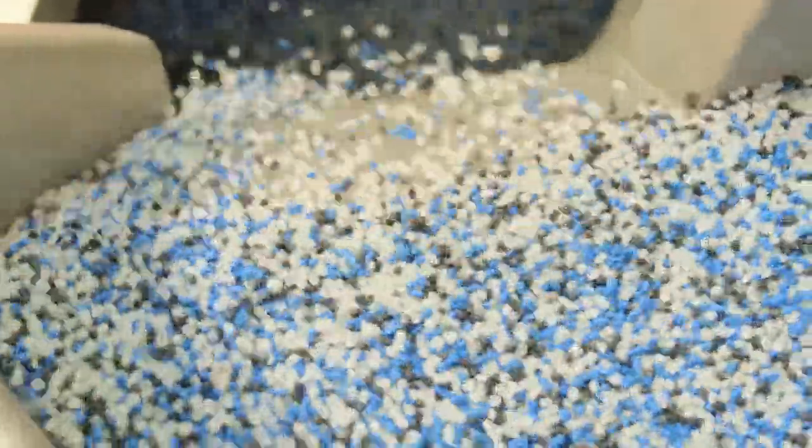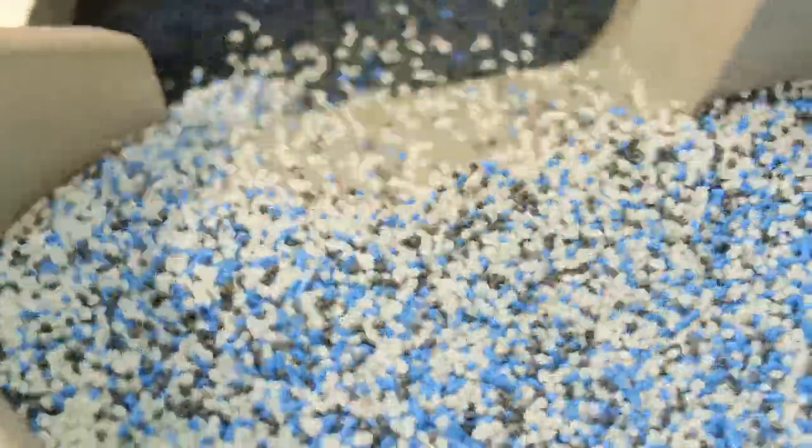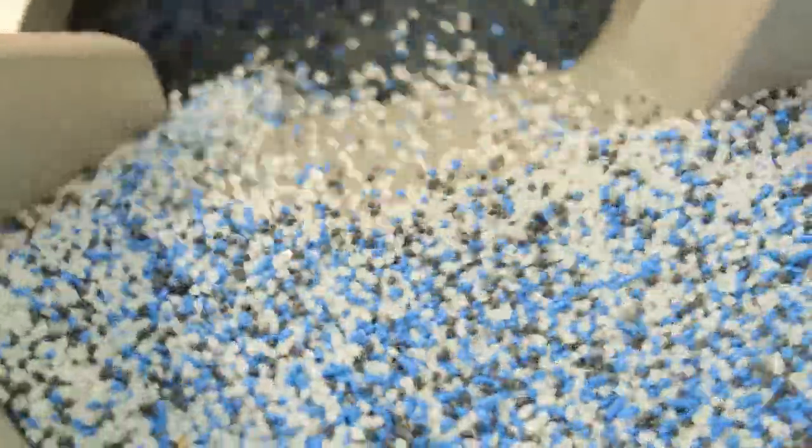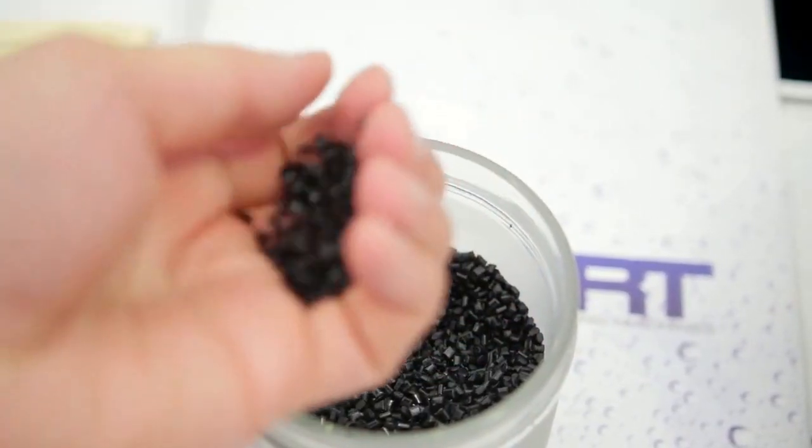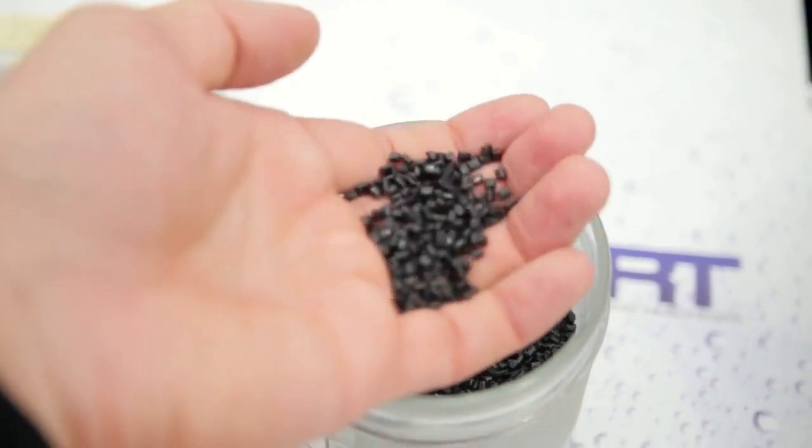Casio calculators are made from a variety of materials including plastic, metal, and glass. The plastic components are made from a high-grade polycarbonate material that is both durable and lightweight.